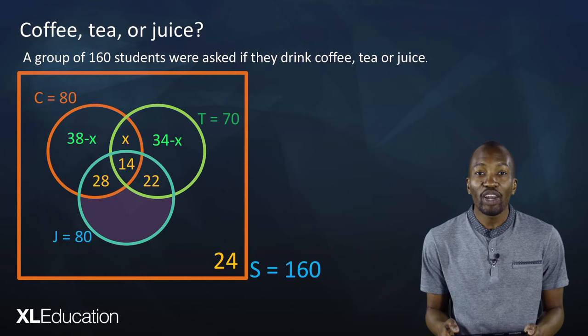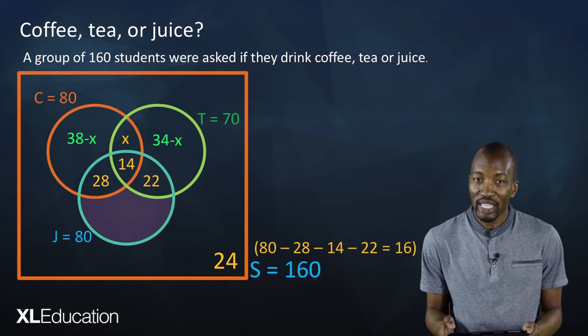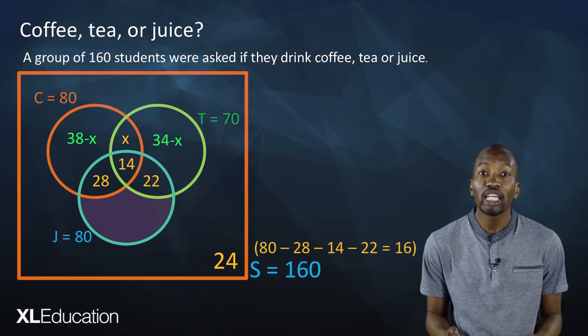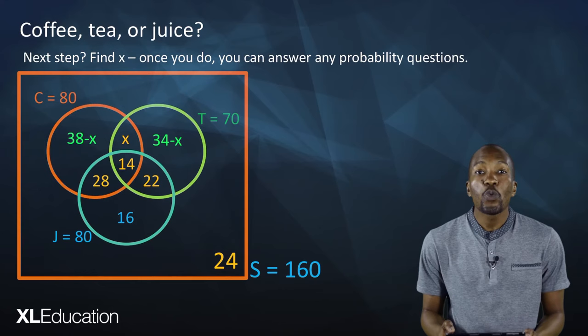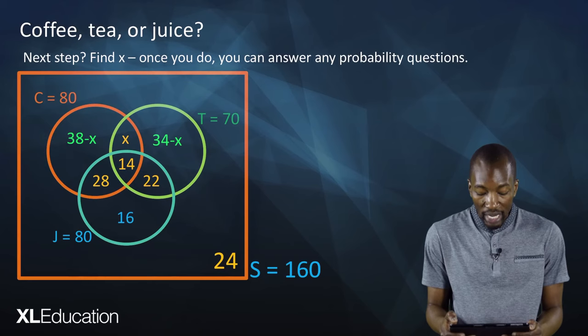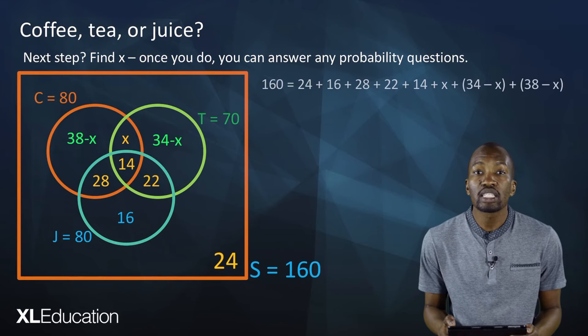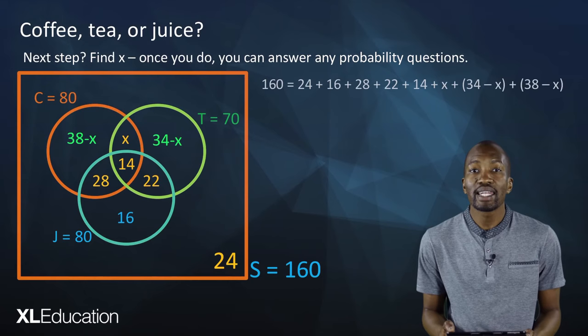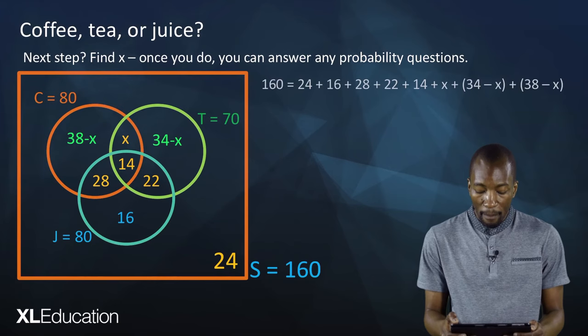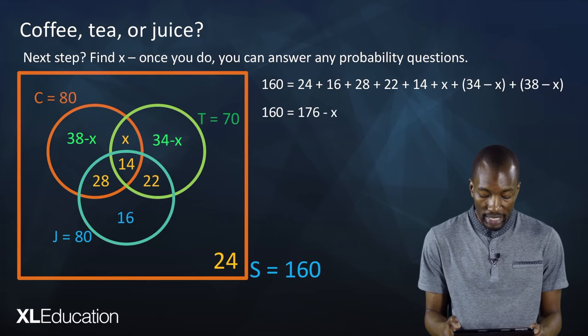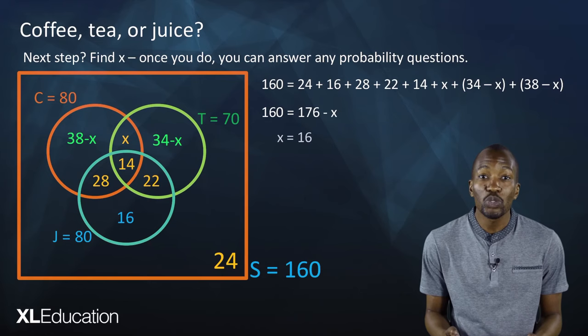Now let's look at the number of people who drink only juice. We do 80 minus 28 minus 14 minus 22, which gives us 16. To find x, everything in our sample space added together must equal 160. So: 160 equals 24 plus 16 plus 28 plus 22 plus 14 plus x plus (34 minus x) plus (38 minus x). Solving this gives 160 equals 176 minus x, therefore x equals 16.